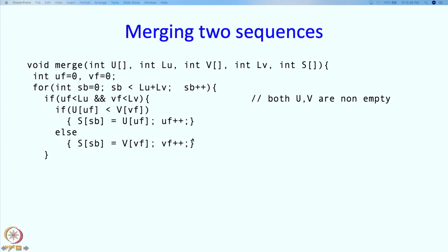If one of those U and V is empty, so let us say U is not empty, UF is smaller than LU, so that means V is now empty. In that case we do not have to do any comparisons. We just move whatever is at front of U to the back and then we just advance the front for U.